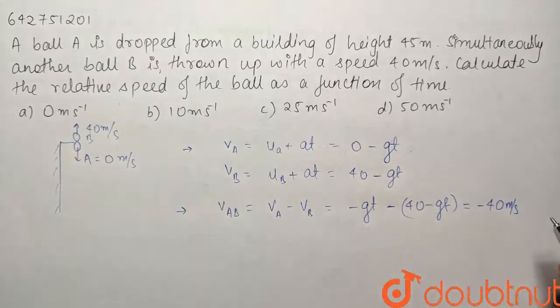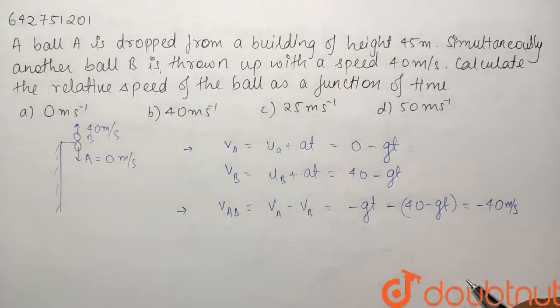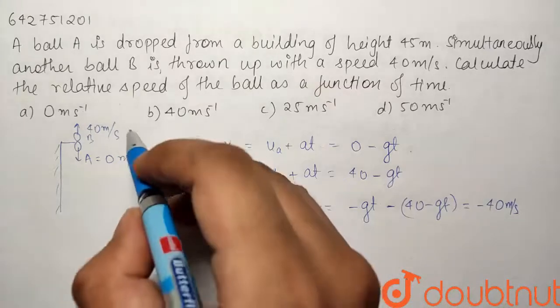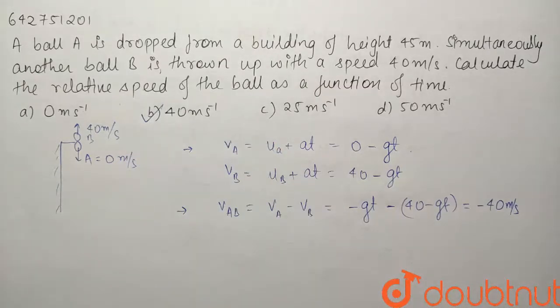So basically their relative velocity will always be constant and it will be equal to 40 meter per second. The direction will be dependent on whether you are seeing Va relative to B or B relative to A. So our correct option will be option B, their relative velocity will always be equal to a constant that is 40 meter per second. Thank you.